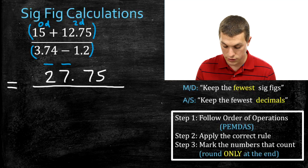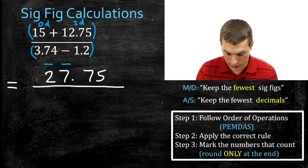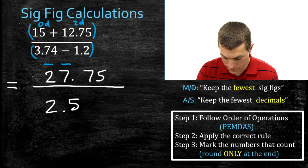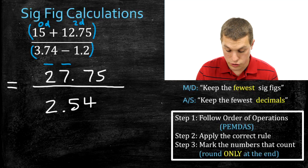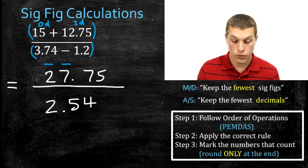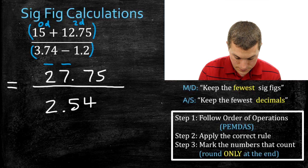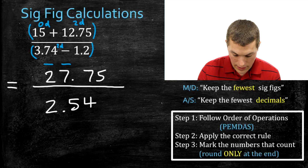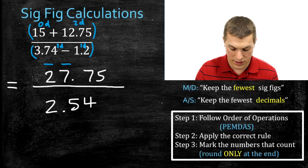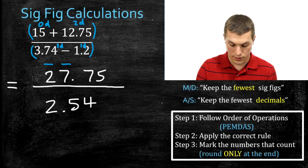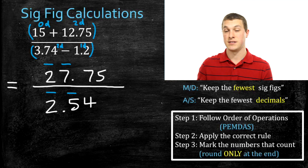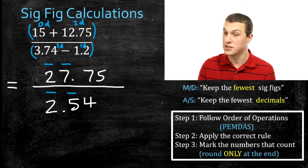Now I resolve what's on the bottom of that fraction: 3.74 minus 1.2. When I put that in my calculator I get 2.54. That was subtraction, so I follow the addition-subtraction rule — keep the fewest number of decimals. 3.74 has two decimals and 1.2 has one decimal, so I keep one decimal. I mark that: my two counts and my five counts, but my four doesn't.